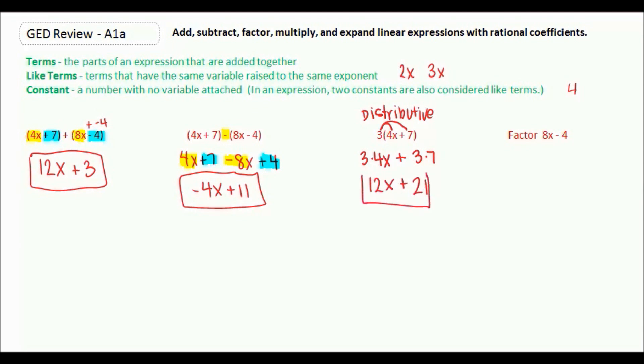I want to back up one second because there's actually another way of writing each of these answers. It's usually common to write your answers with your variable first and then your constant after. Or in certain cases where we have multiple terms, we usually start with the biggest exponent and work our way down. However, it's also possible to switch the order of our terms. So for our first one, instead of saying 12x + 3, we could say 3 + 12x.